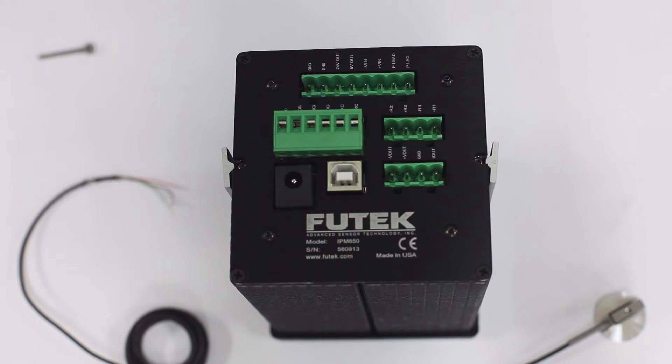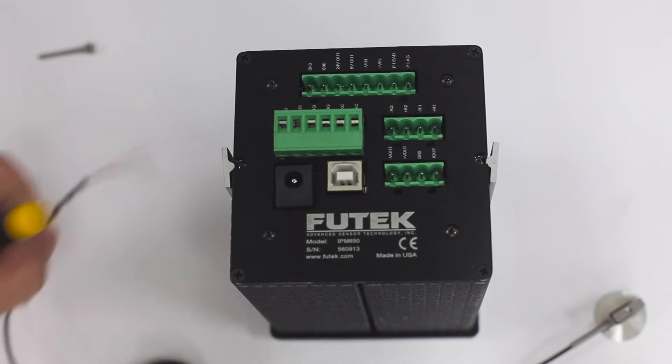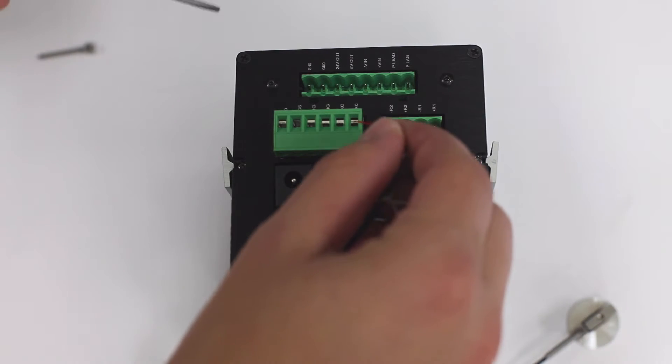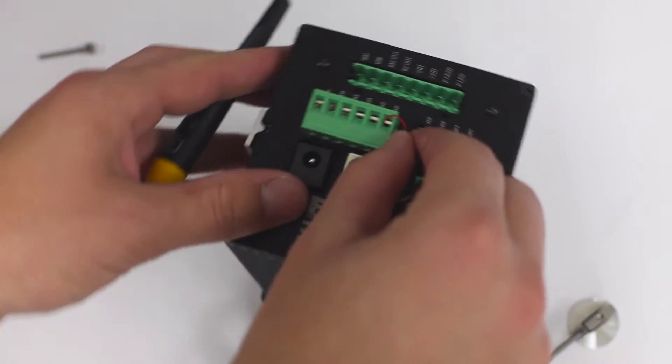It is also important to monitor the load cell's readings during the installation process to see if we are applying any unintended loads. We can do this using an IPM650.